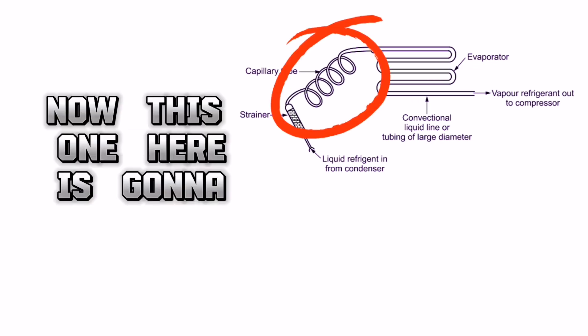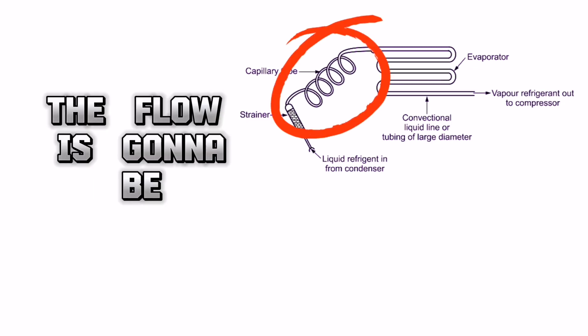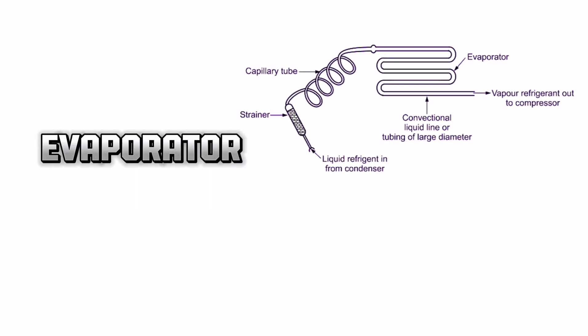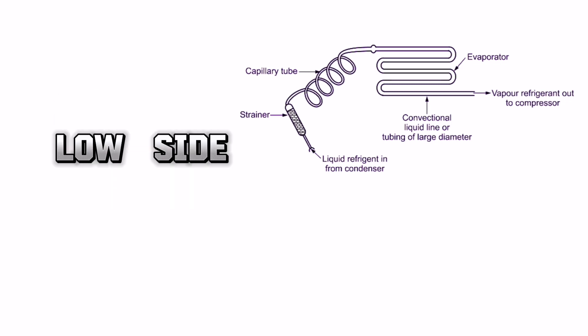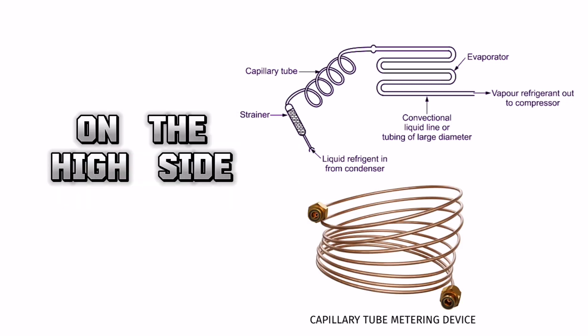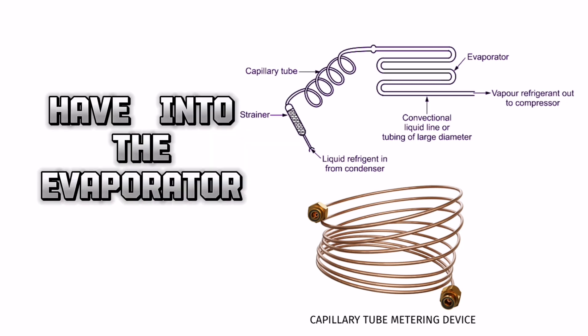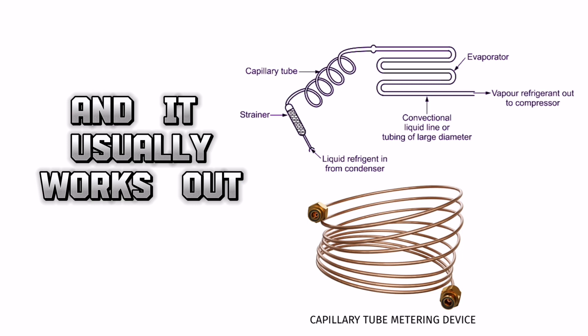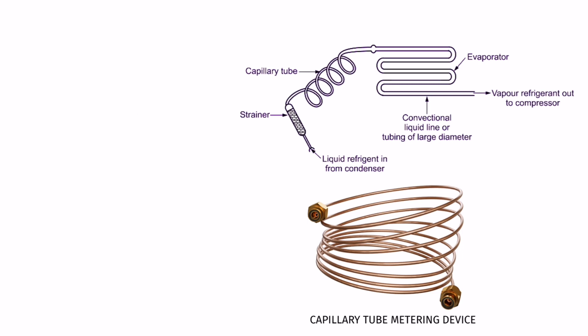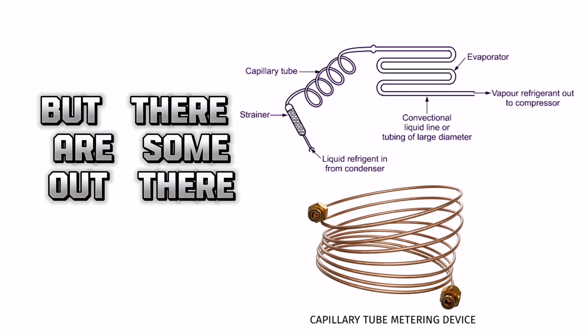Now, this one here is going to maintain what I like to say is constant flow. The flow is going to be constant going into the evaporator, but it's going to depend on the pressure on the high side and the pressure on the low side. The higher the pressure on the high side, the more pressure you're going to have or the more flow you're going to have into the evaporator. But as the pressure in the evaporator increases, it's going to restrict the flow of it coming in. And it usually works out, but this is a type of metering device that it used to be used. They don't use it that much anymore, but there are some out there.